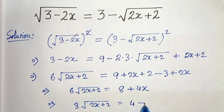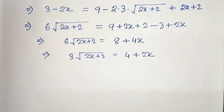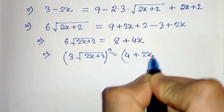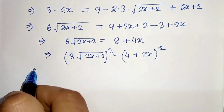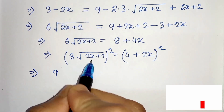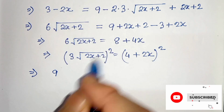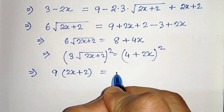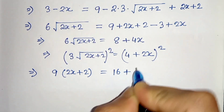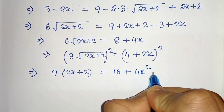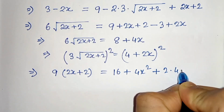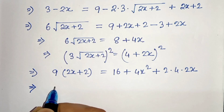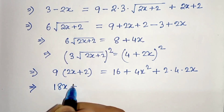Since 2 is a factor of all terms, we divide by 2, giving 3√(2x+2) = 4 + 2x. Now we square both sides: 3² × (2x+2) on the left, and (4 + 2x)² on the right. So we get 9(2x+2) on the left, and on the right 4² = 16, plus (2x)² = 4x², plus 2ab = 2 × 4 × 2x.